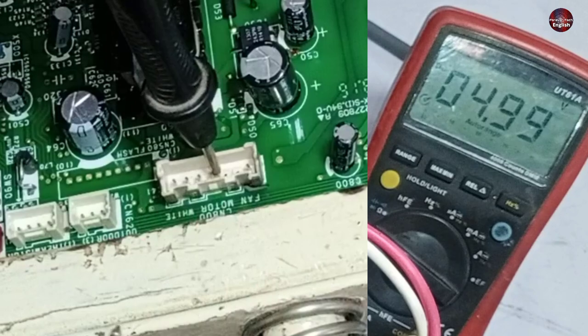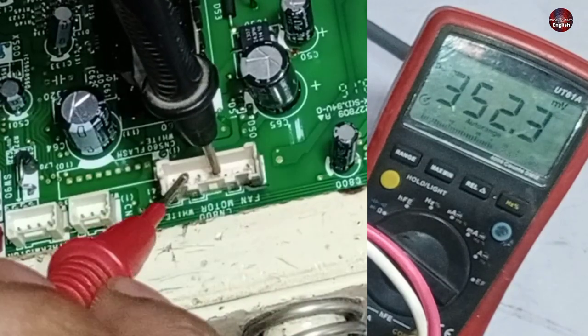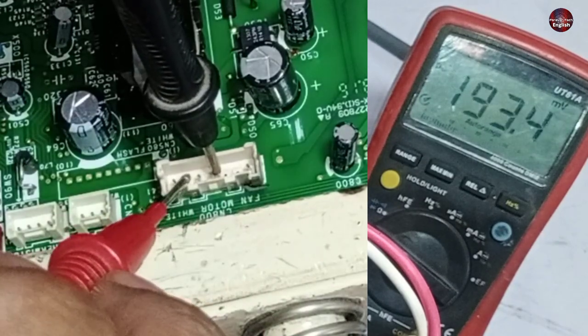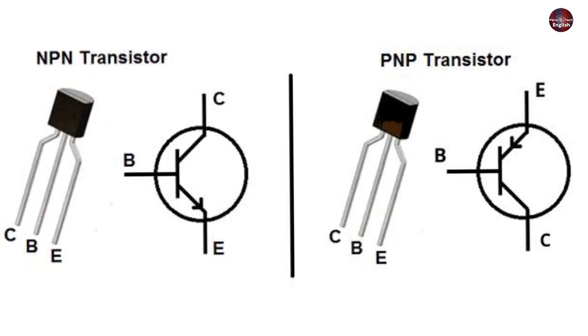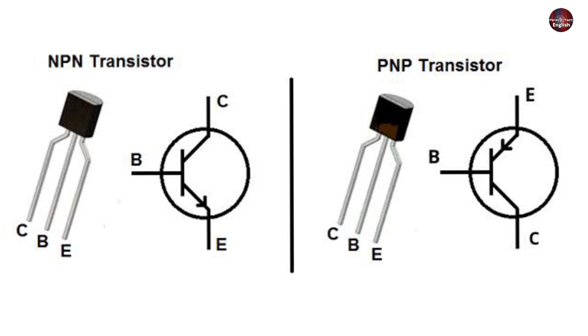Now I am checking the second last pin, which is the control pin of the fan connector, and we are not getting any voltages at the control pin. So, we will check the NPN and PNP transistors, if needed, I will change them.